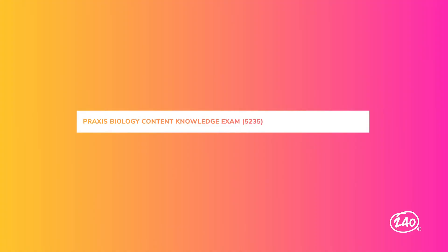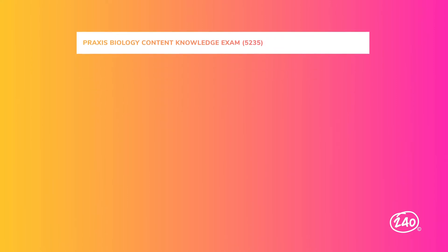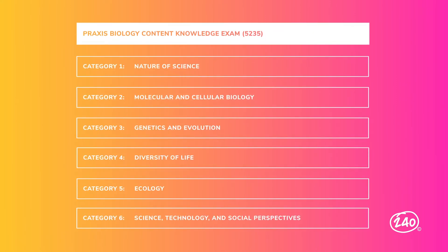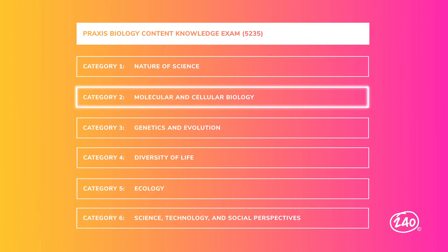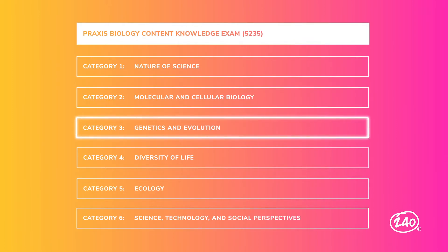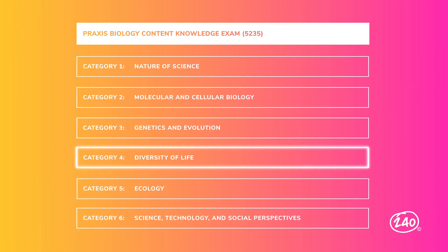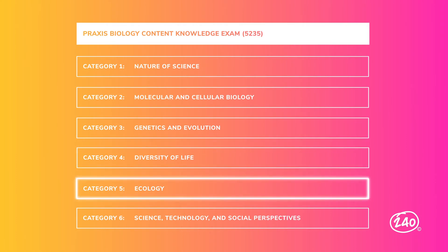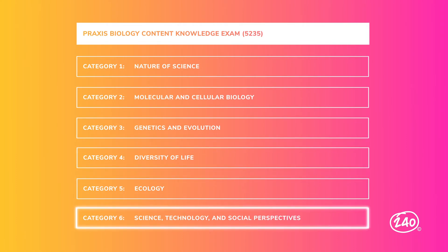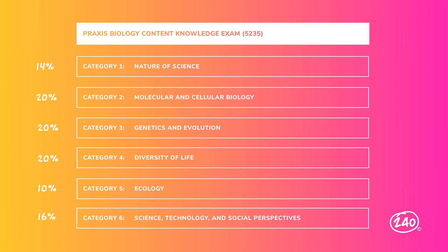The Praxis Biology Content exam consists of six categories: the nature of science, molecular and cellular biology, genetics and evolution, diversity of life, ecology, and science technology and social perspectives. Each category is worth between 10 and 20% of your exam. We'll discuss some of the most important things to know for each category.